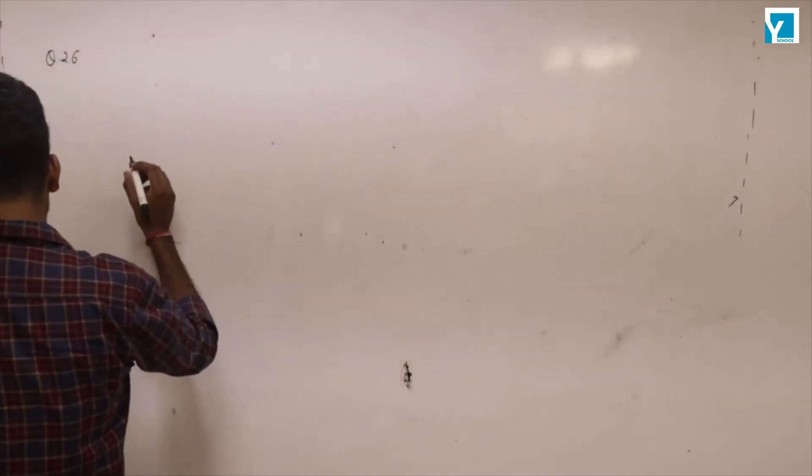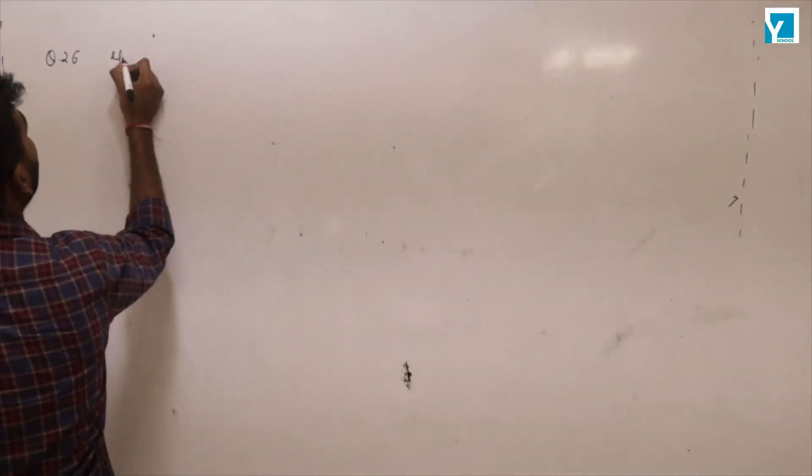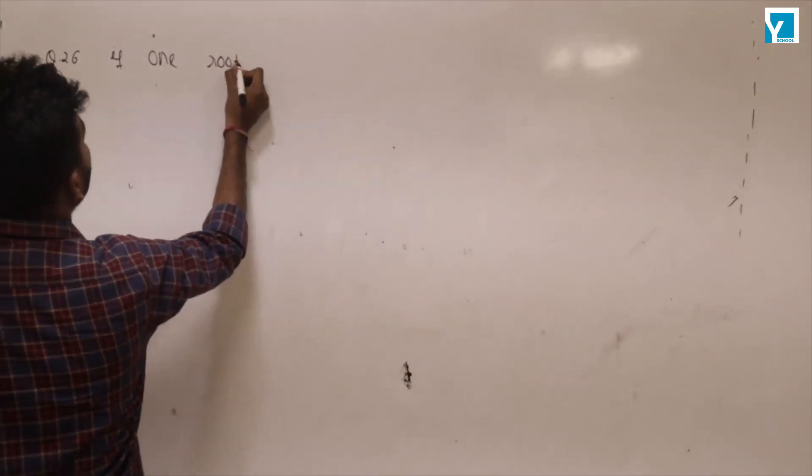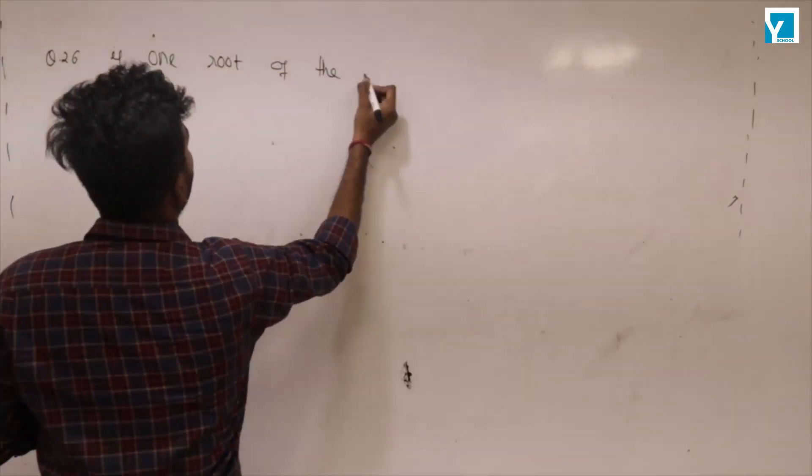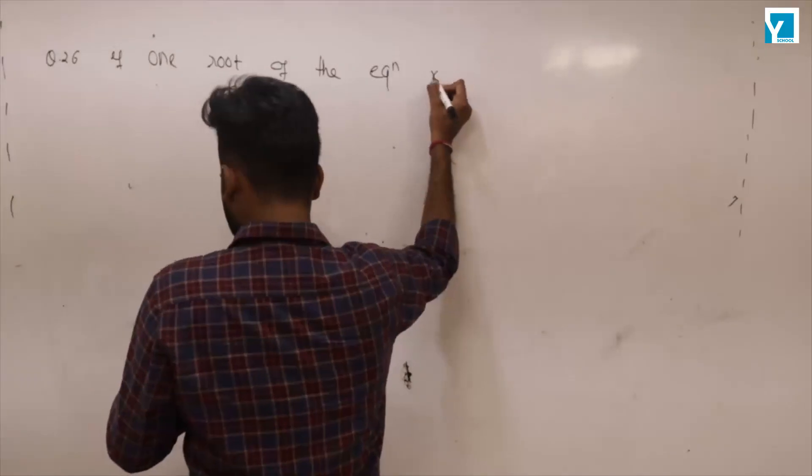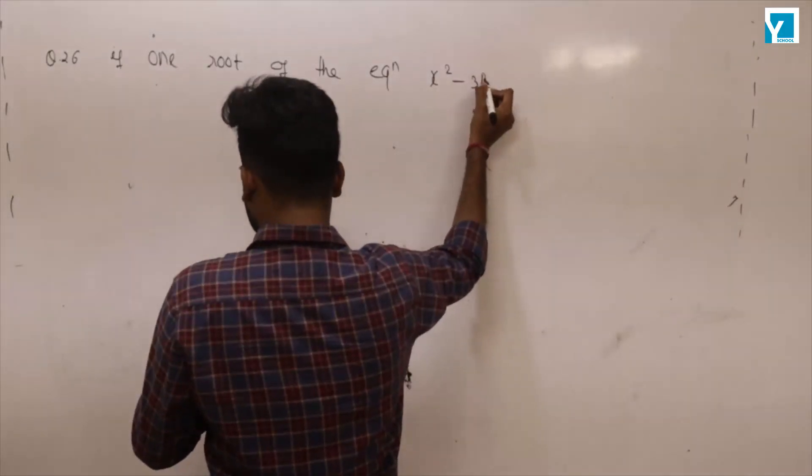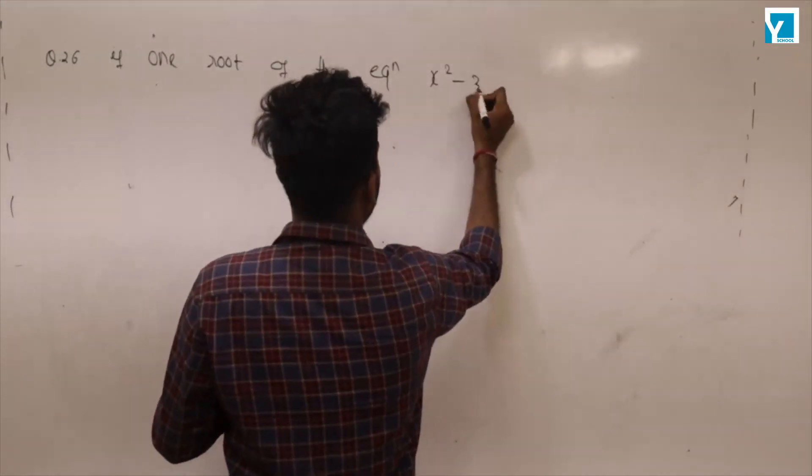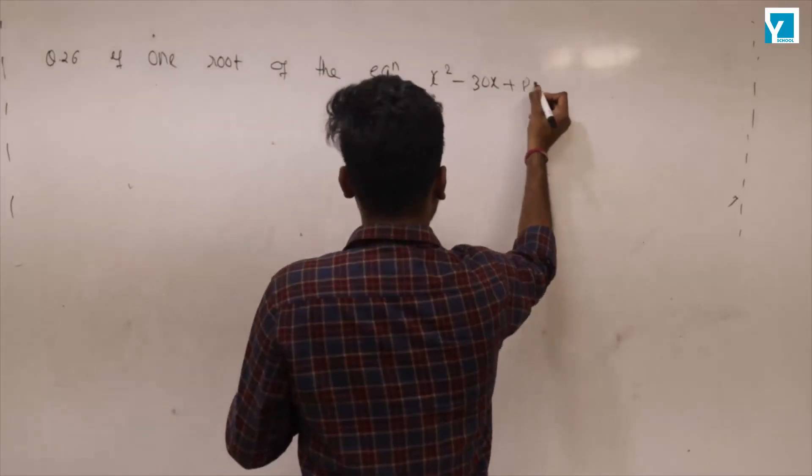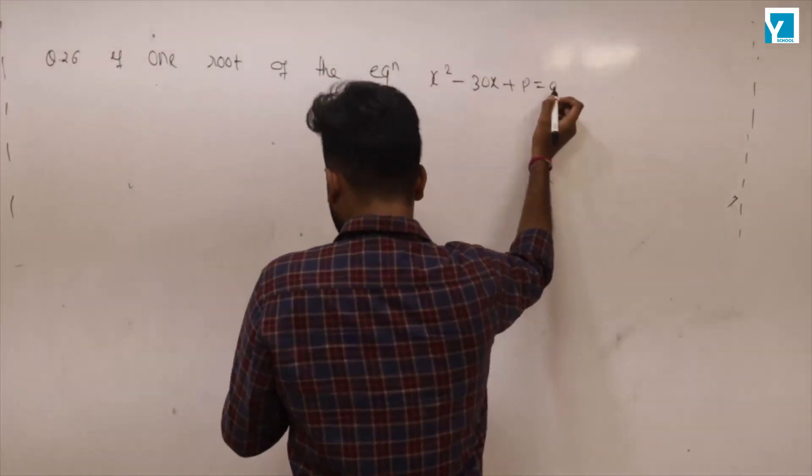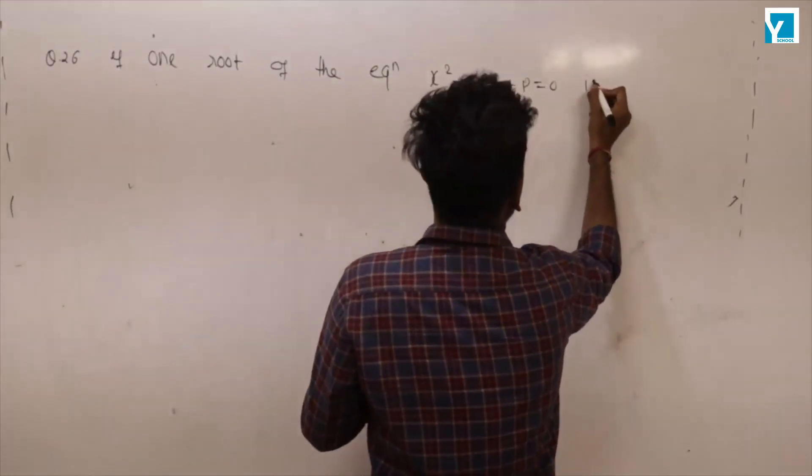if one root of the equation x squared minus 30x plus p equal to 0 is square of the other,